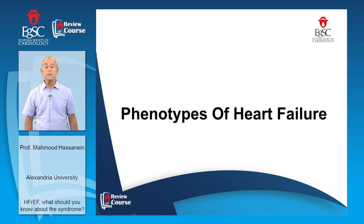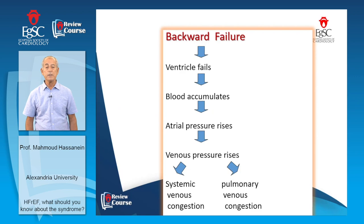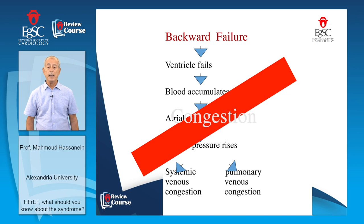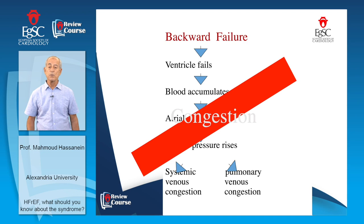A few types of heart failure: first, backward versus forward failure. In the backward failure hypothesis, when the ventricle fails, blood accumulates in the ventricle, then atrial pressure rises, and venous pressure will rise. On the right side, it will cause systemic venous congestion, and on the left side, it will cause pulmonary venous congestion. This leads to congestion — whether systemic or pulmonary venous congestion — and that's why the term congestive heart failure was coined. Congestive heart failure is the most dominant form, accounting for almost 90% of cases.